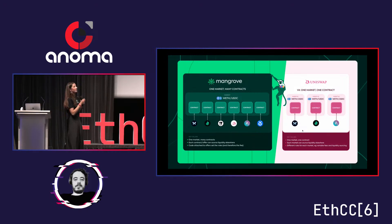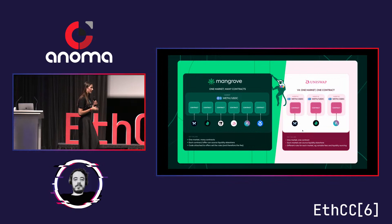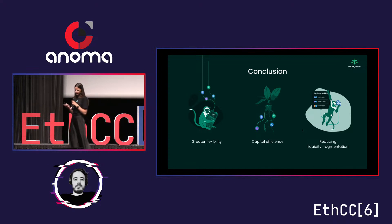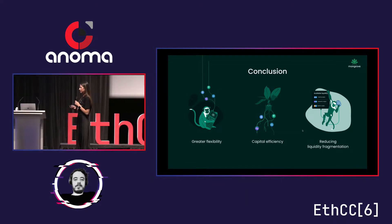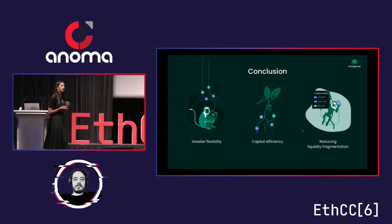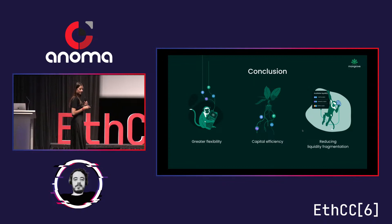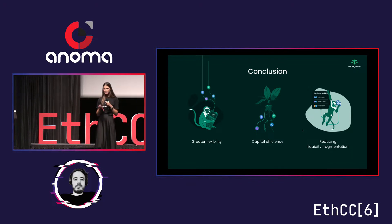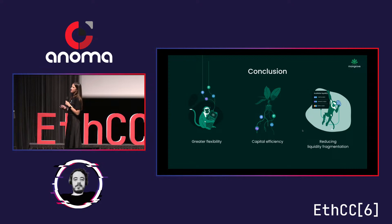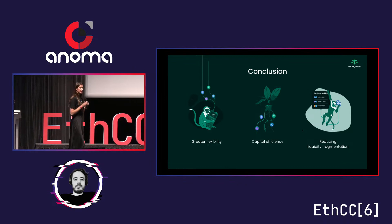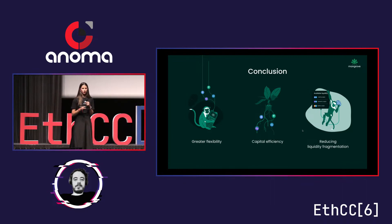To summarize, there is more economic value in continuous liquidity. By allowing liquidity providers to embed any logic into their smart offers, Mangrove provides a solution to reduce liquidity fragmentation in DeFi. Features such as last look, liquidity amplification, and multi-liquidity sourcing provide greater flexibility and capital efficiency to liquidity providers.